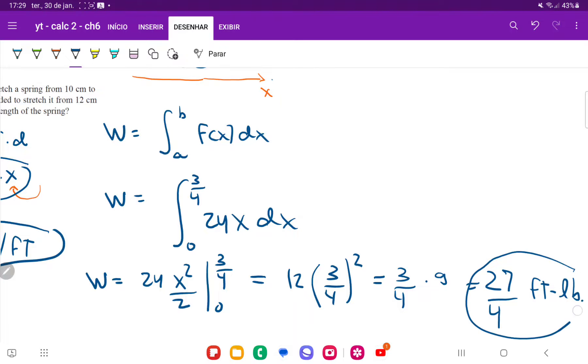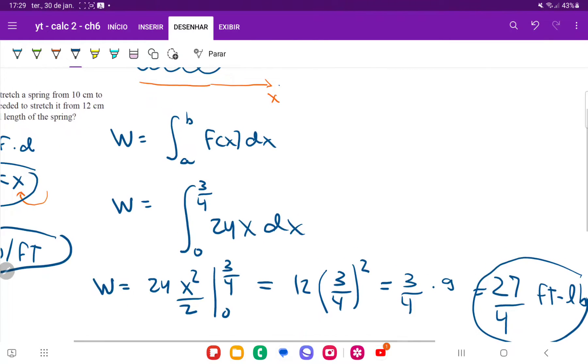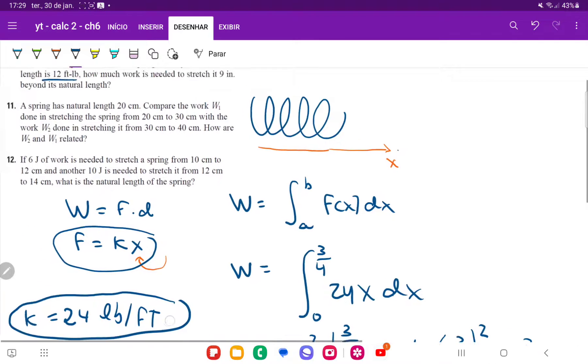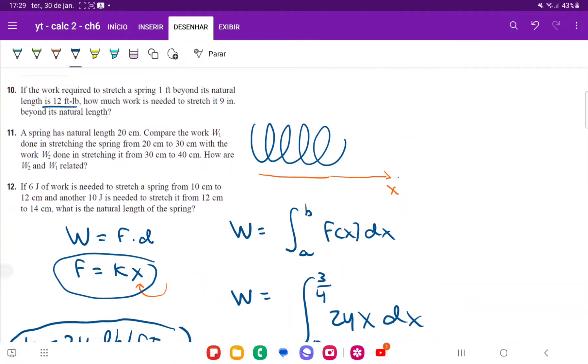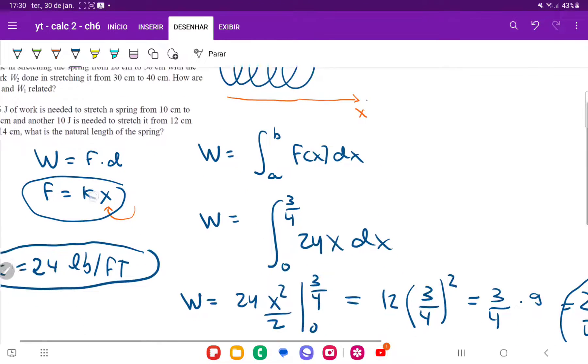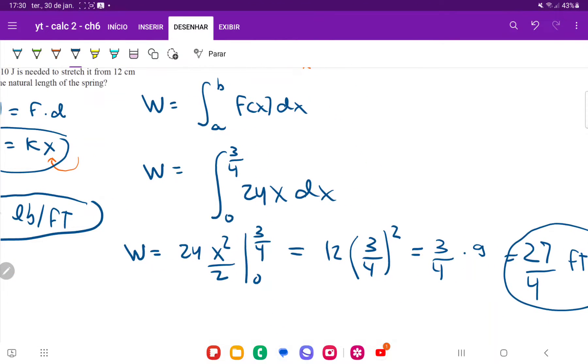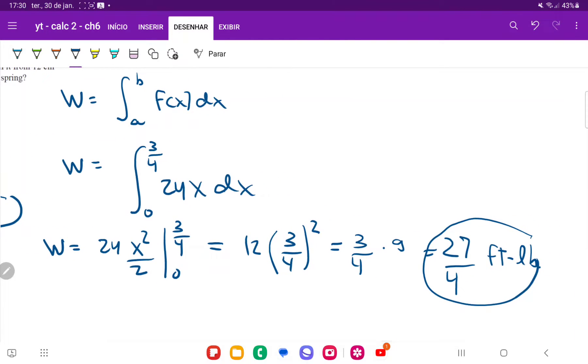So this is the answer for problem number 10, where first we took this integral here because we knew that the work was 12 feet times pounds to stretch it one feet beyond. And so we use that integral to solve for k, which was the missing constant of the spring. And so once we found the value of k, which is 24, now we were able to set up a new integral calculating the work, stretching it from zero to three quarter of a foot, which is nine inches. And that ends up being 27 over four.